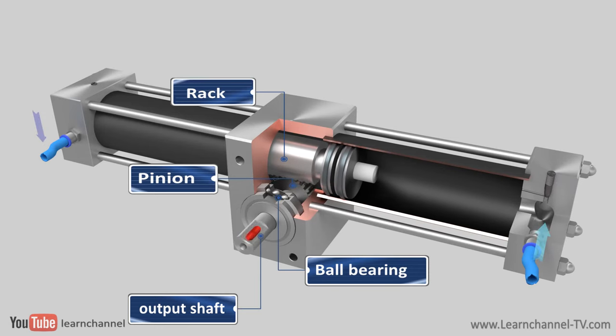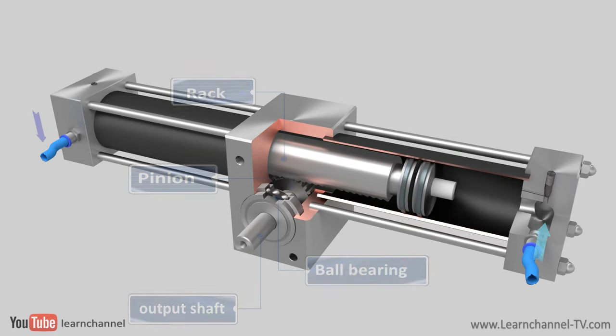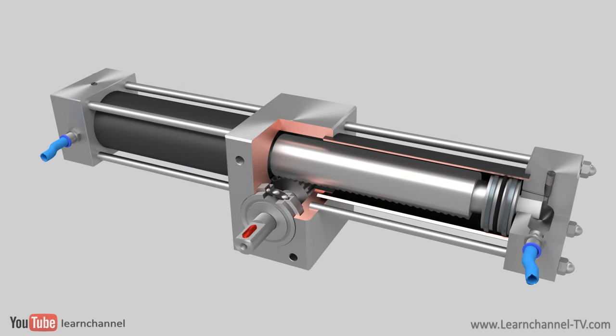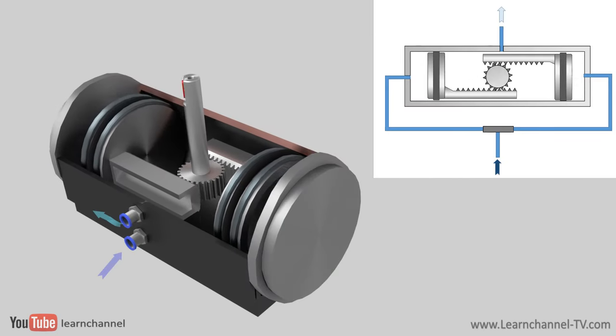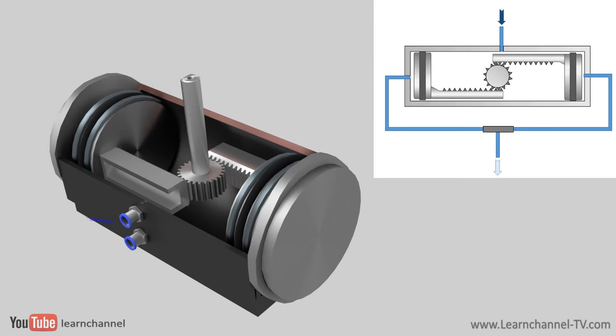Compressed air on the left-hand chamber produces clockwise rotation. Rack and pinion rotary cylinders offer a wide range of torque and rotation. They are mechanically stable and provide radial load support.